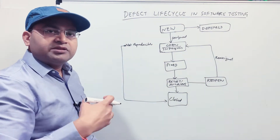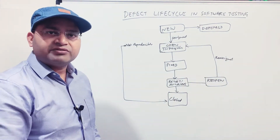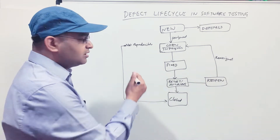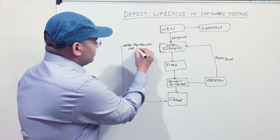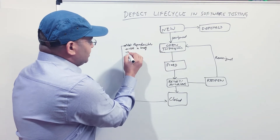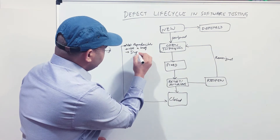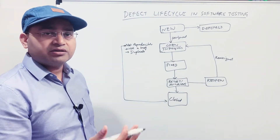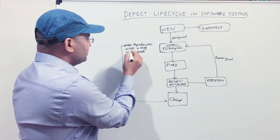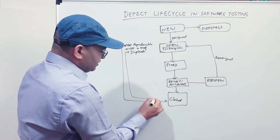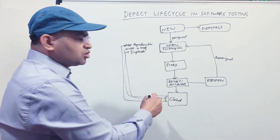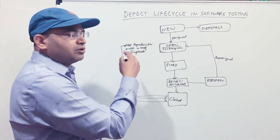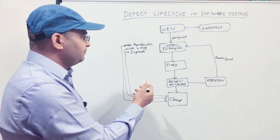Another resolution is Not a Bug — if the issue was caused by incorrect test data and not a coding problem, the developer uses proper data, confirms everything works as expected, and marks it as Not a Bug. A third resolution is Duplicate — if a similar defect was already raised previously, the developer marks the resolution as Duplicate and moves the defect to Closed.